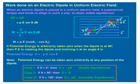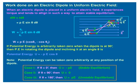Potential energy can be taken as zero arbitrarily at any position of the dipole. If theta is 0, then U equals minus PE, the minimum potential energy, so it represents stable equilibrium. If theta is 90 degrees, then U equals 0. If theta is 180 degrees, then U equals plus PE, the maximum potential energy, representing the case of unstable equilibrium.